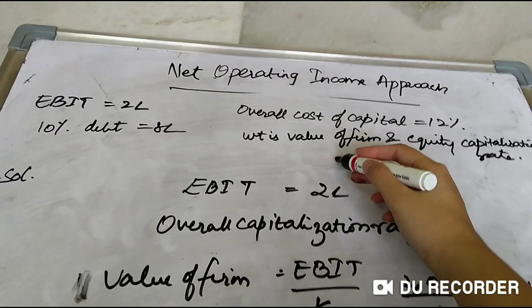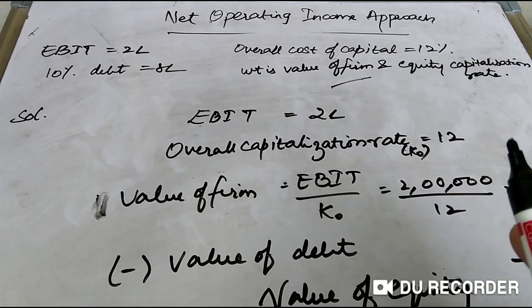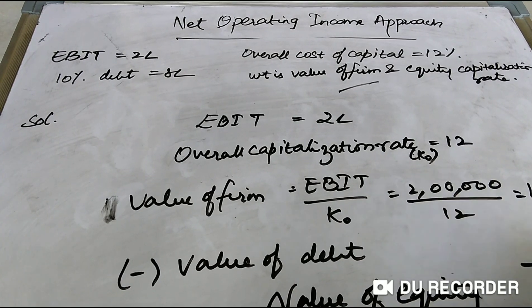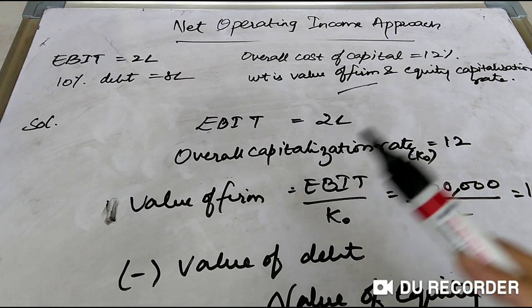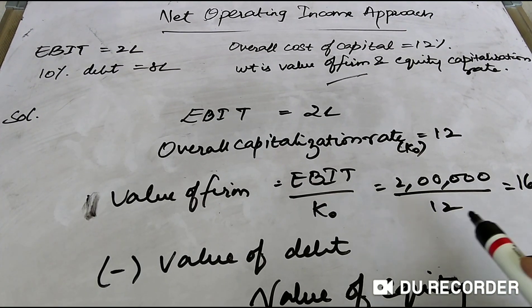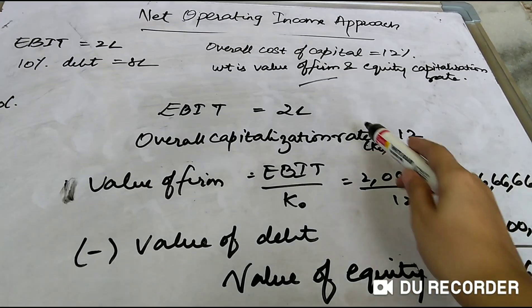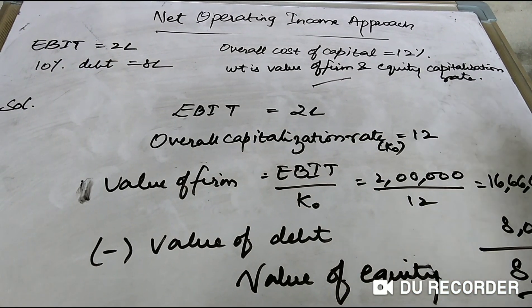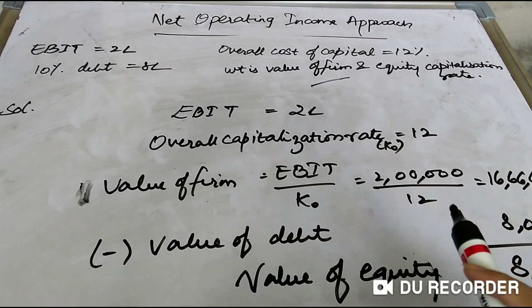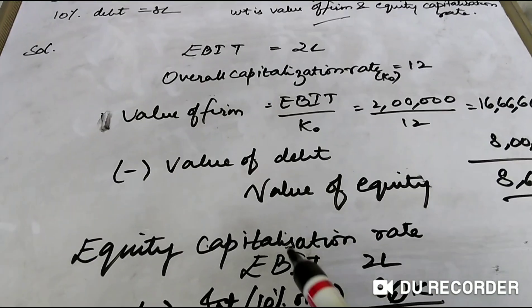The value of the firm is 16,66,667 rupees — that part is done. The second part is the equity capitalization rate. For that, first you have to calculate the value of equity. Value of equity = Value of firm minus value of debt. You deduct the value of debt from the value of the firm to get equity.